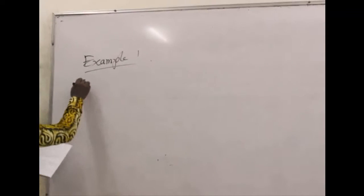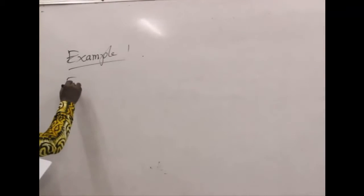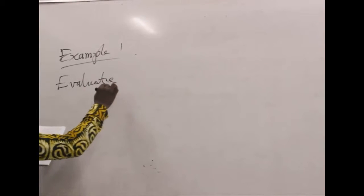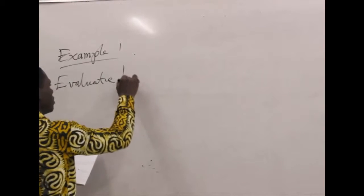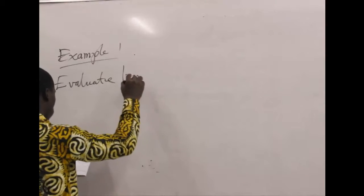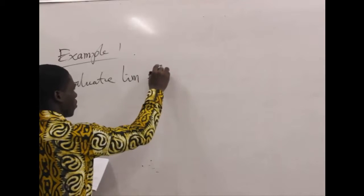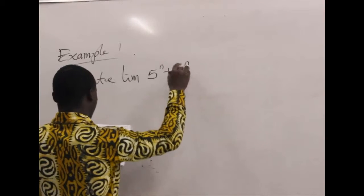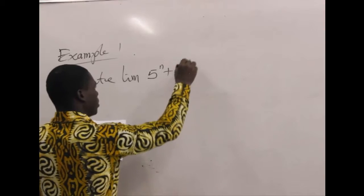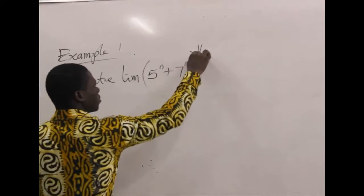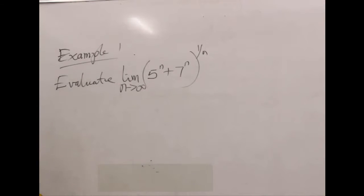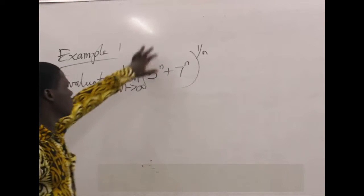So we are evaluating the limit of (5^n + 7^n) all to the power 1 over n, as n approaches infinity. So we are evaluating this — let's see how best we can do this.